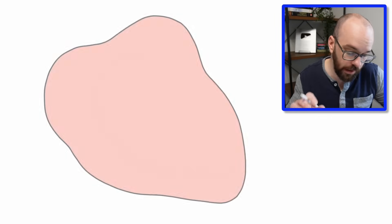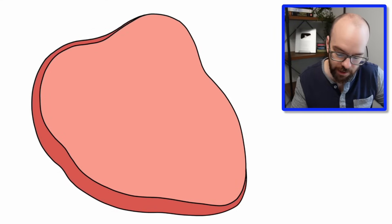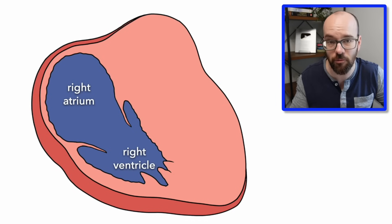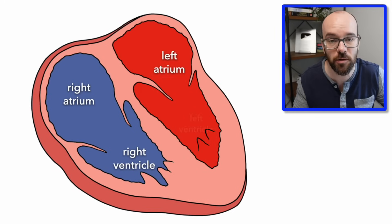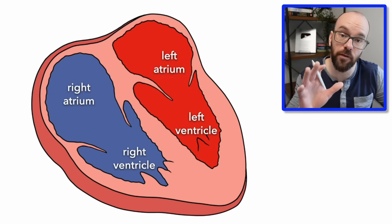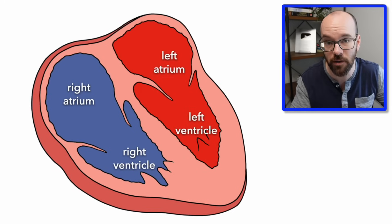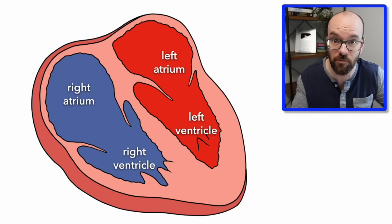Let's start by drawing out the heart. Here we have an outline of the main structure of the heart — the cardiac muscle. We've got the right atrium, right ventricle, left atrium, and left ventricle. The right side is in blue because it carries low-oxygen blood, and the left side in red because it carries high-oxygen blood that's just come from the lungs.